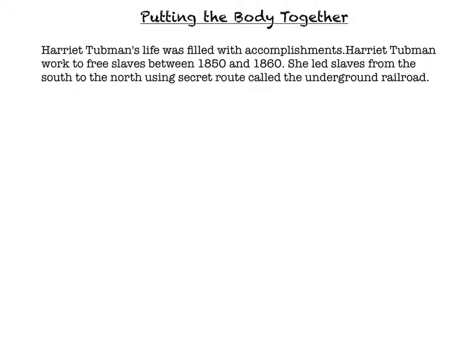Now I've gone ahead and added in my first supporting detail after my topic sentence. Here's my topic sentence, and then here is my first supporting detail from the detail sentence form. My topic sentence: 'Harriet Tubman's life was filled with accomplishments.' Then my supporting detail: 'Harriet Tubman worked to free slaves between 1850 and 1860. She led slaves from the south to the north using the secret route called the Underground Railroad.' That is my first supporting detail. I still need to put in my second and third supporting details.